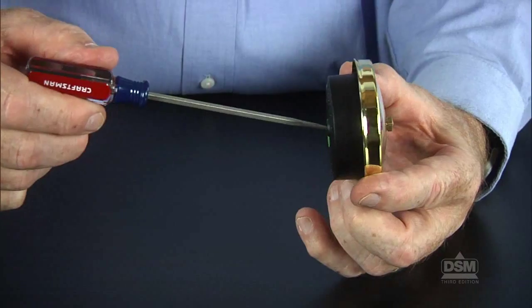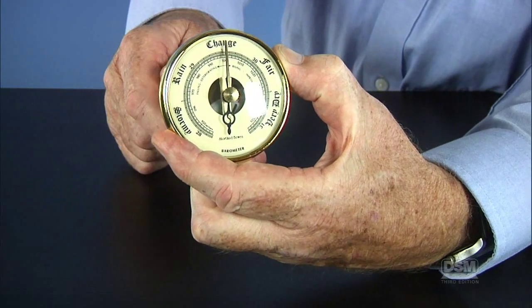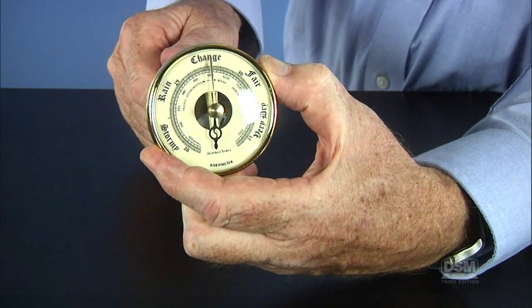Calibrate the barometer by turning the little screw in the rear plate of the barometer until the needle points to the current atmospheric pressure. Tap gently on the glass to make the needle settle into position.